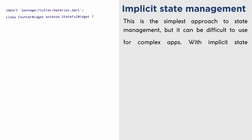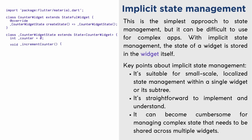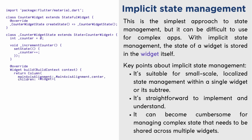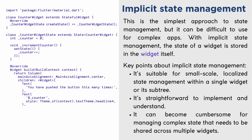Implicit state management is the simplest approach, but it can be difficult to use for complex apps. With implicit state management, the state of a widget is stored in the widget itself. Key points: it's suitable for small-scale, localized state management within a single widget or its subtree. It's straightforward to implement and understand, but can become cumbersome for managing complex state that needs to be shared across multiple widgets.